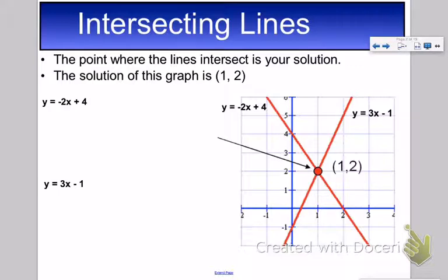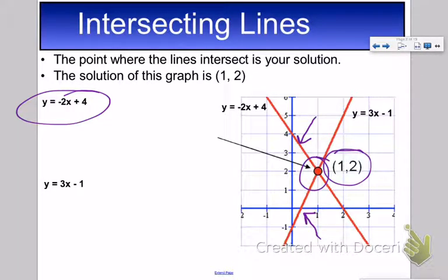If we look at this example, we have the graph of -2x + 4 represented by this first line, and then 3x - 1 represented by the second line. The solution is where they intersect, so that is at point (1, 2).